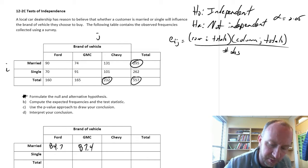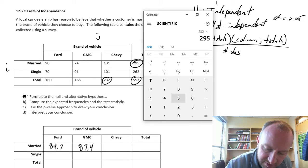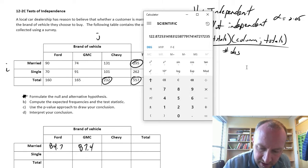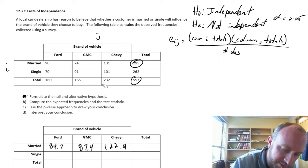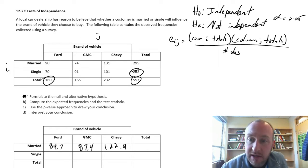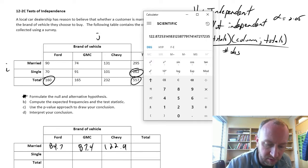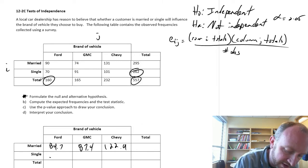Moving over, then we have this one. So 232 times 295 divided by 557, 122.9. And then if we go down, now we'll go back to Ford. So our column total comes back to 160, but now we need this. 262 is our relevant row total. So 160 times 262 divided by 557, 75.2.